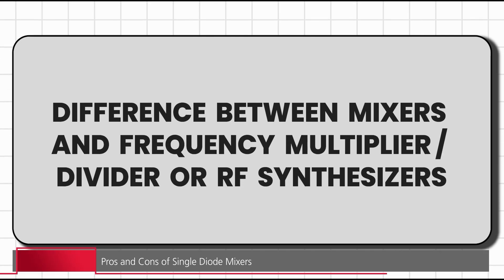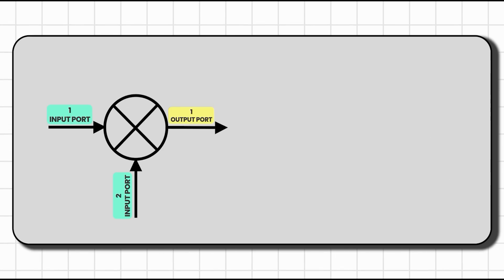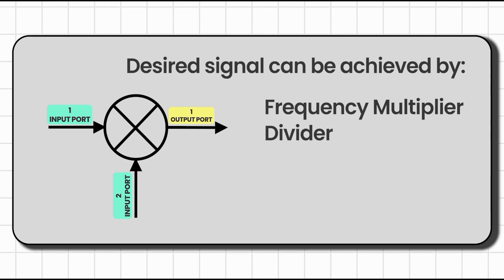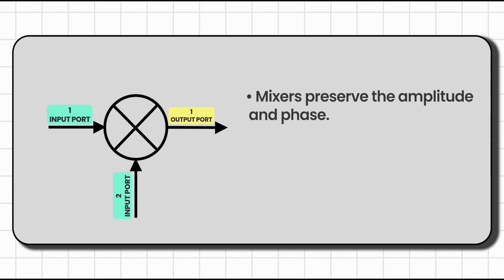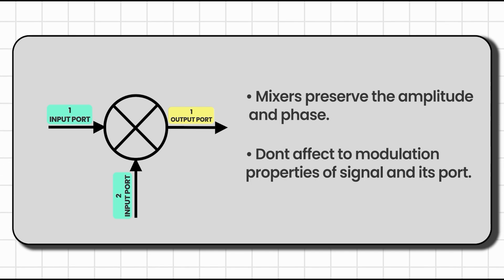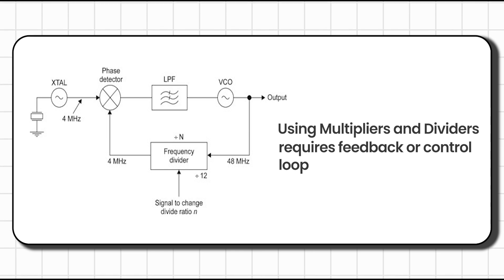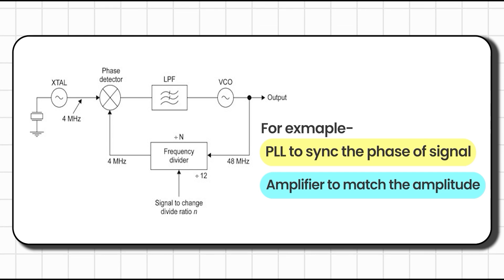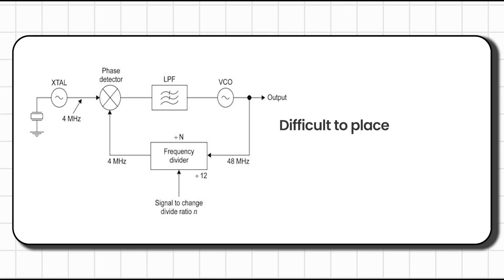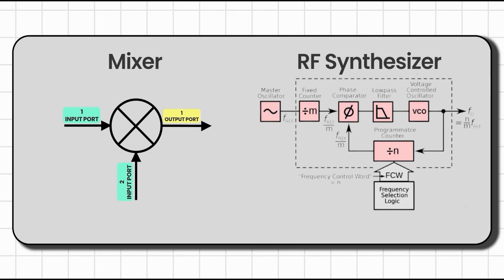Before discussing the single diode mixer, let's talk about the difference between mixers and frequency multipliers, dividers, or RF synthesizers — since we can also achieve a desired signal with those. In contrast to frequency multipliers and dividers, which also change signal frequencies, the advantage of mixers is that they theoretically preserve amplitude and phase without affecting the modulation properties of the signal. Multipliers and dividers require a feedback or control loop like a PLL to sync phase and amplifiers to maintain amplitude, making those circuits larger. That's why we always prefer mixers for RF up and down conversion.